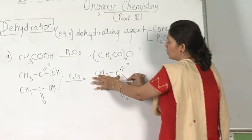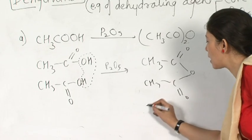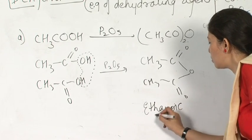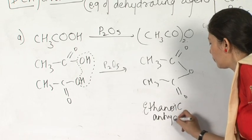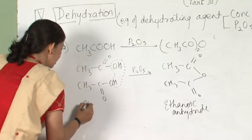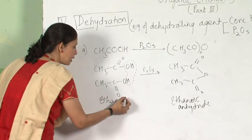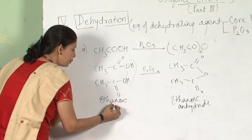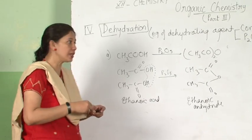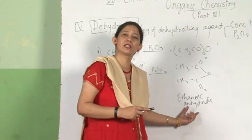This two-carbon atom acid is ethanoic acid. It is the same thing, and hence the name goes as ethanoic anhydride. This one is ethanoic anhydride, and this is ethanoic acid. I am going to use this compound, ethanoic anhydride, in many reactions. If I want to give the common name, acetic acid, I use the word here as acetic anhydride.